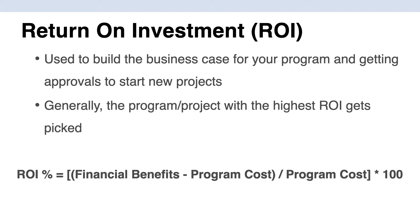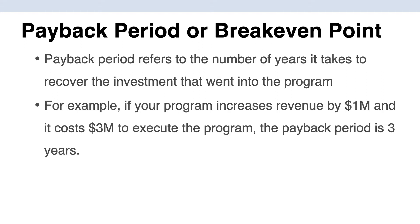Starting with the first one: Return on Investment. ROI is used to build the business case for whether or not it makes sense to start your program. Generally this is done at the start of the program, and the company will pick the program or project that gives them the highest ROI. You calculate ROI as a percentage: financial benefits received from executing the project or program, minus the cost, divided by the cost, then multiply by 100 to turn it into a percentage.